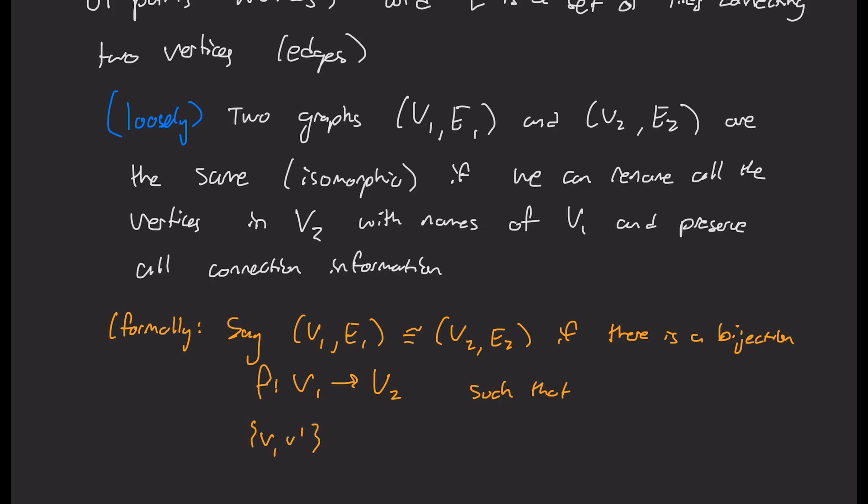So whenever V, V prime is an edge in graph one, then F of V, F of V prime is an edge in graph two.